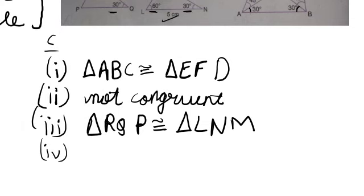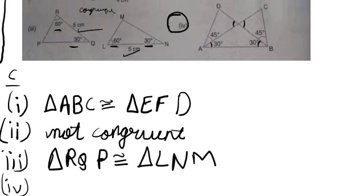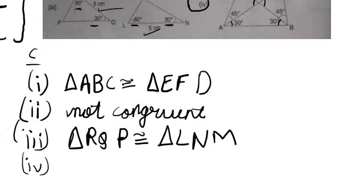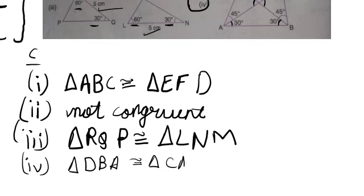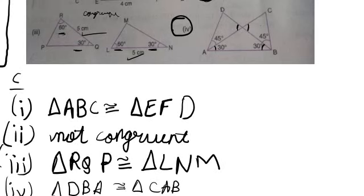How are they congruent? We write them in proper sequence. Triangle DBA is congruent to triangle CAB. Friends, this is all for today. If you are new to my YouTube channel, do not forget to subscribe and leave a like on this one. Till then, take good care of yourself and bye-bye.